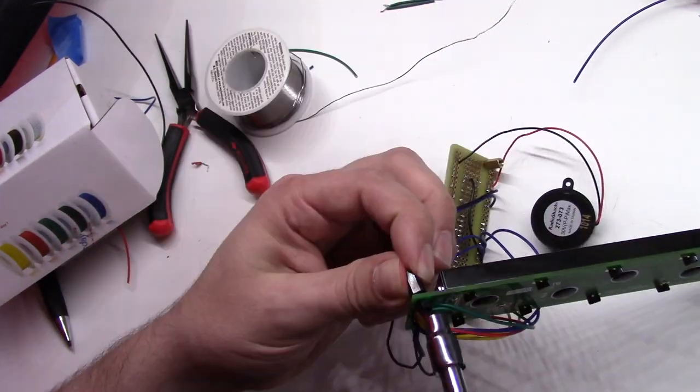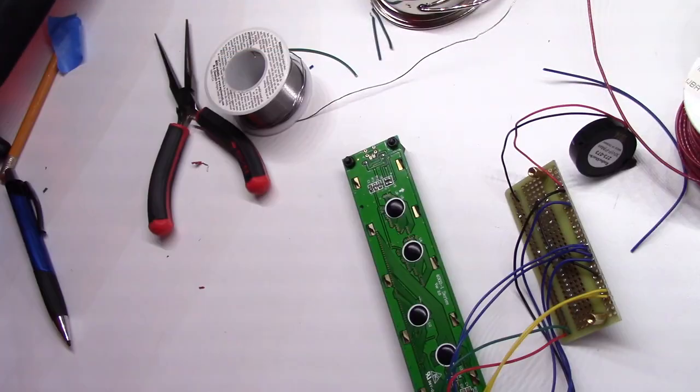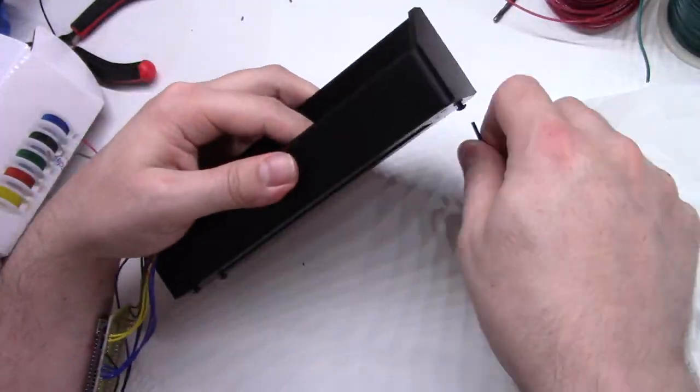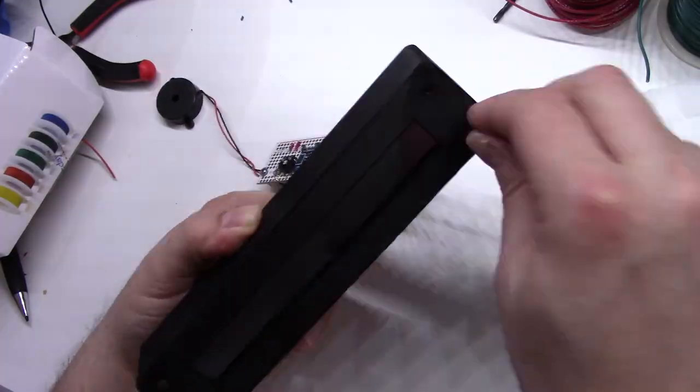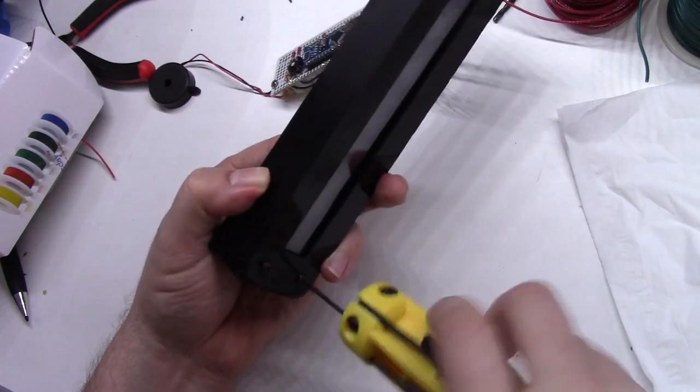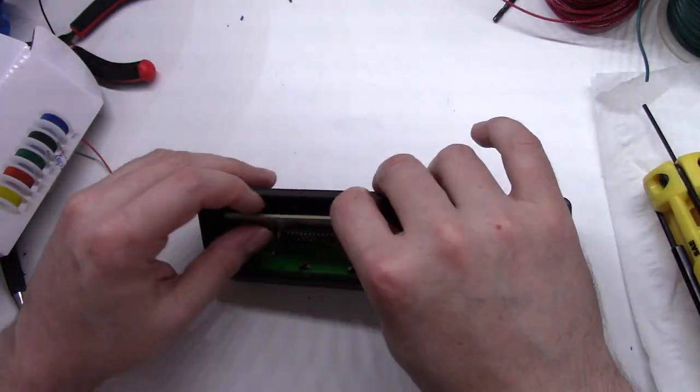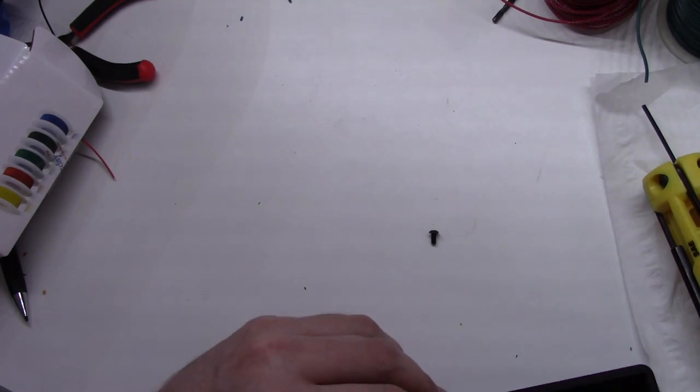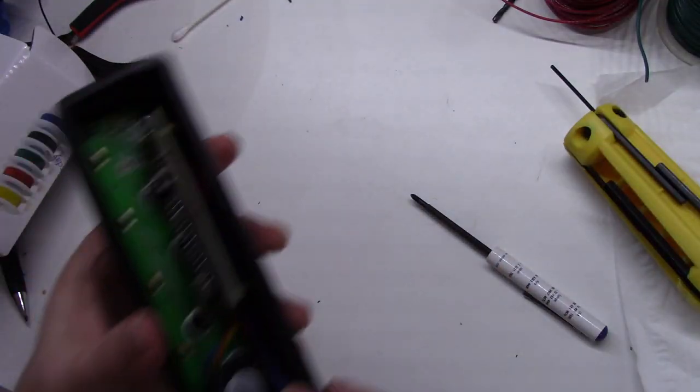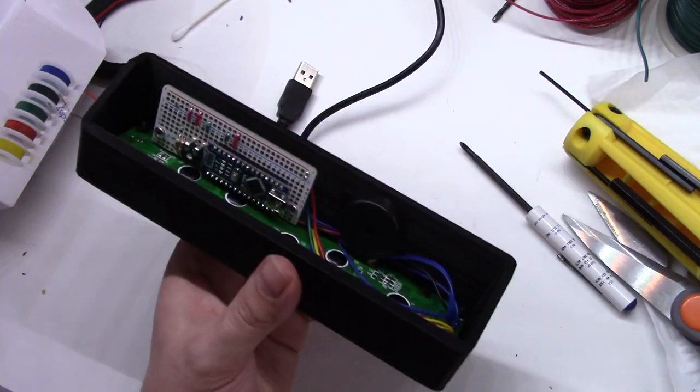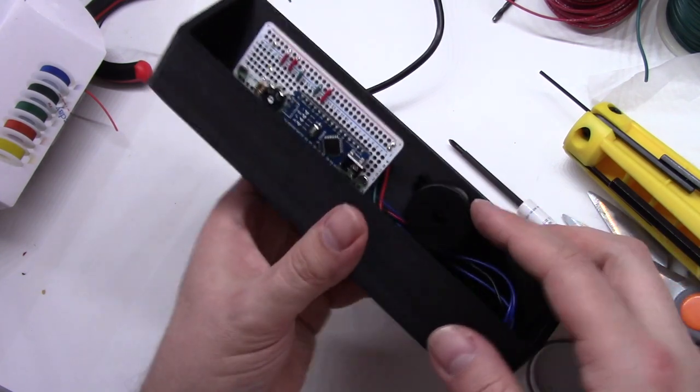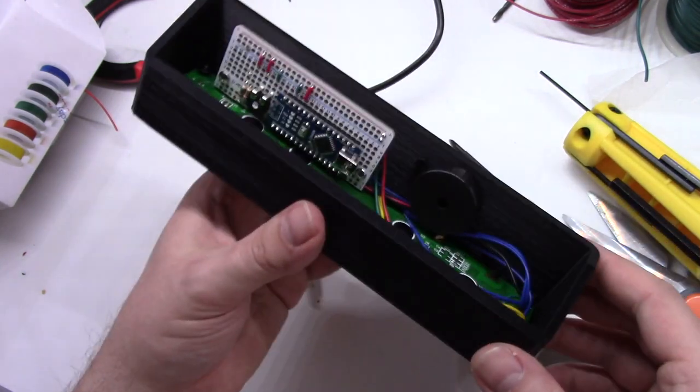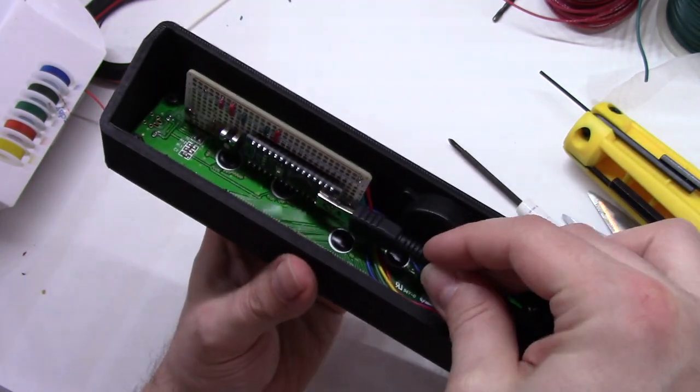Now that all the wiring is done we can start final assembly. I'm going to use some nylon standoffs to attach the LCD display to the plastic enclosure. Now I can insert the LCD into the enclosure and fasten it with four screws. Now I'll install the circuit board using the holes we drilled earlier. To attach the speaker in place I'm going to use some double sided foam tape. And that's it! We are finished! Now I'll just grab a USB cable and make sure everything fits.